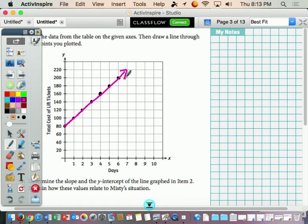The terms of slope and the y-intercept of the line graph in item 2. Explain how these values relate to Misty's situation. So y-intercept. Intercept, it's kind of like in football when someone intercepts a football, they grab onto it. So y-intercept means the y-axis is grabbing onto our line and it is grabbing onto our line right here. So because we only care about the y when we write the y-intercept, we just put y equals 80. We do not care about the x-axis at all.